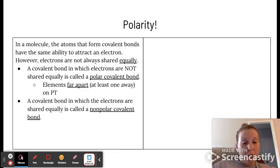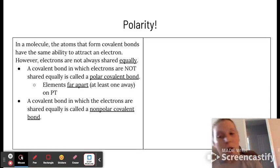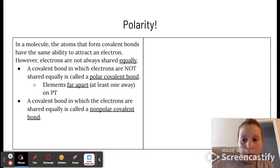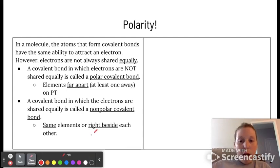If they are shared equally between the atoms, or maybe not zero difference, but like 0.4 or less difference, that's known as a nonpolar covalent bond. These would be the same element or right beside each other on the periodic table. If they're right beside each other, these are what we always refer to as nonpolar.